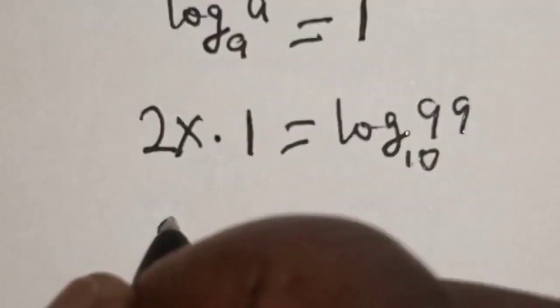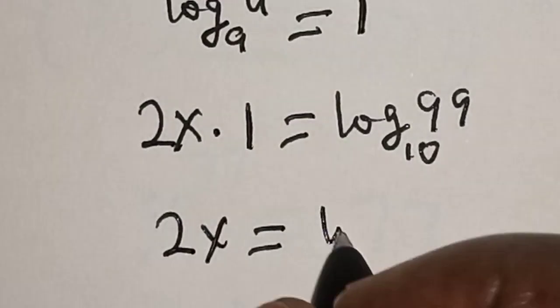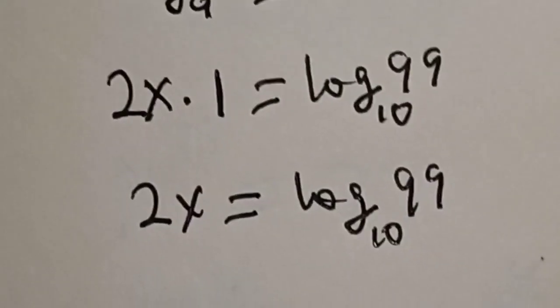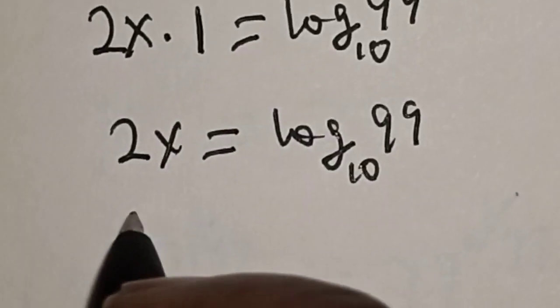2x is equal to log 99 base 10. We are looking for the value of x. Let's divide both sides by 2.